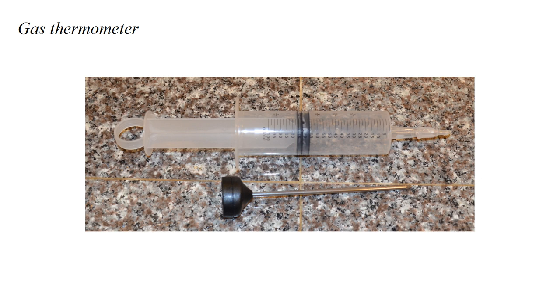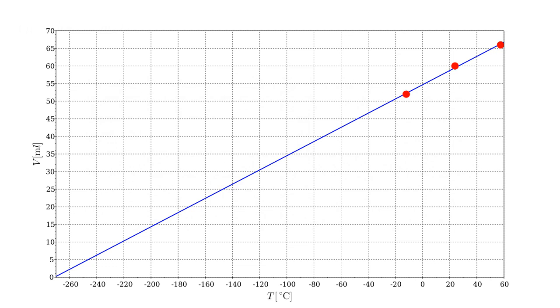In the first video, we experimented with a simple gas thermometer consisting of a 100 milliliter syringe sealed at both ends. We measured its volume at three different temperatures and saw that they were well represented by a linear relation between volume and temperature. Extrapolating this line to zero volume leads to the concept of the lowest possible temperature.